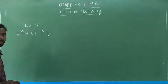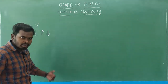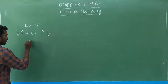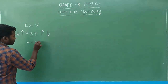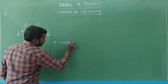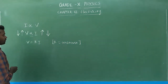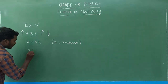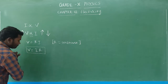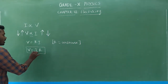This is Ohm's Law. V is directly proportional to I. In order to remove the directly proportional sign, we need to put a proportionality constant. That gives us V = RI, or V = IR, where R is the constant. This is a very, very important equation — that is the Ohm's Law equation.